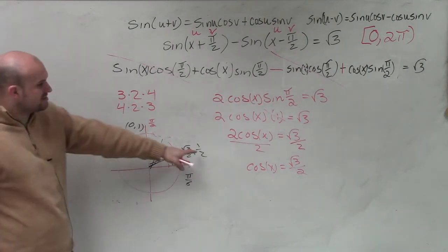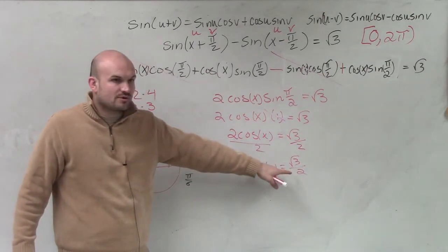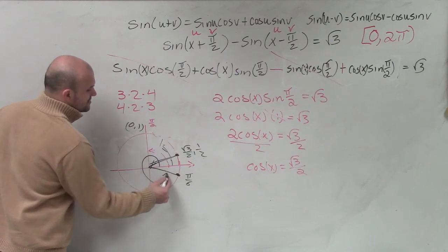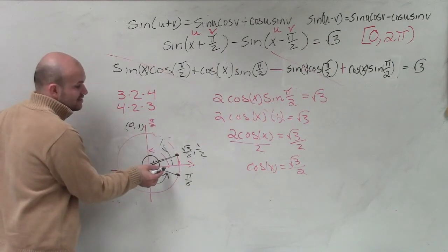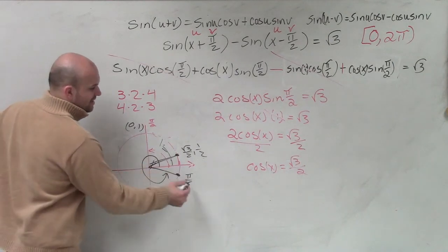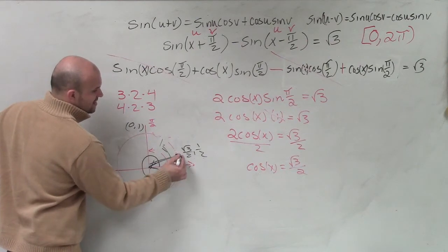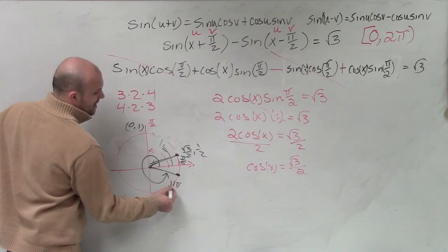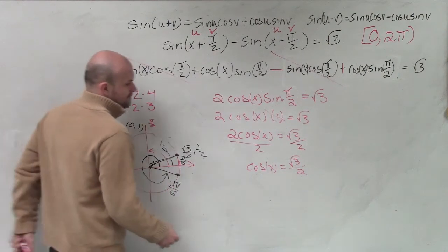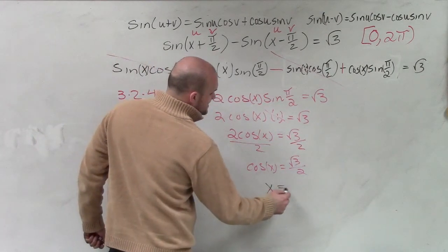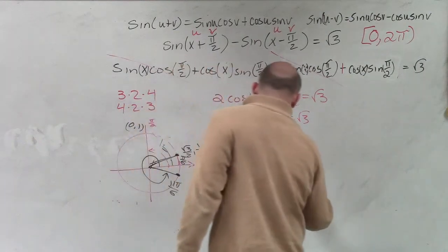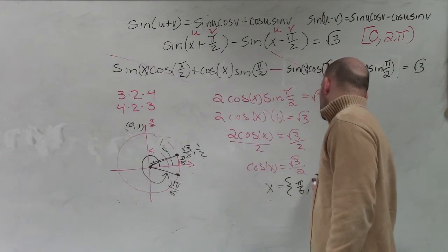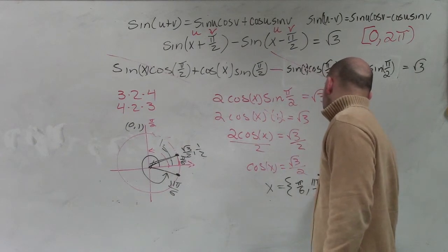And then when else is my cosine going to be square root of 3 over 2? The only else is going to be down here, which is going to be all the way around, not to 2π, which would be 12π over 6. But at this point, so if this is π over 6, this point is 11π over 6. So therefore, I can now say x equals, as a solution set, π over 6 and 11π over 6.